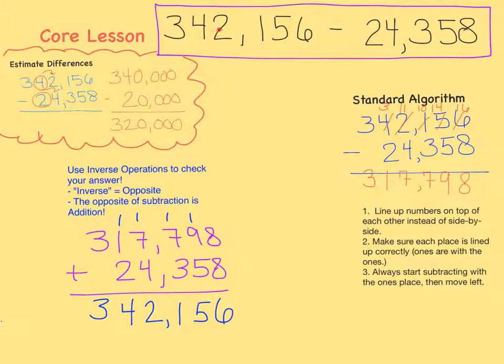342,156 minus 24,358 equals 317,798. Great job, guys!